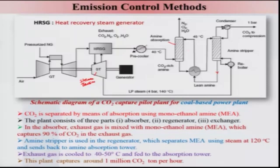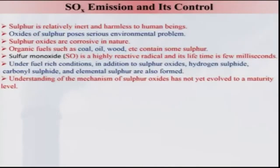The exhaust gas is cooled in a condenser to 40–45 degrees Celsius and fed to the absorption tower. The CO2 is removed, compressed, and can be utilized or stored. This plant captures around 1 million tons of CO2 per hour, which is quite large. There are several similar methods developed by various companies.